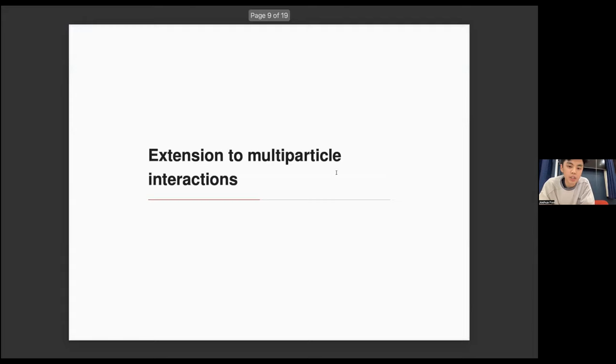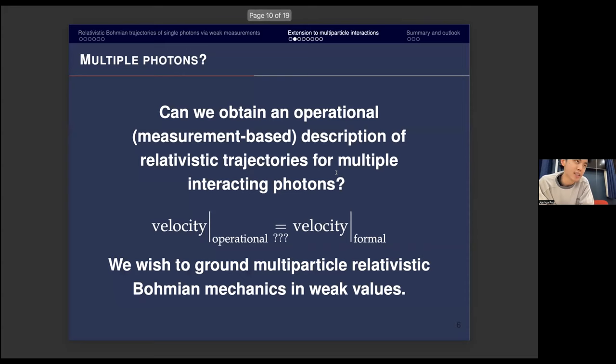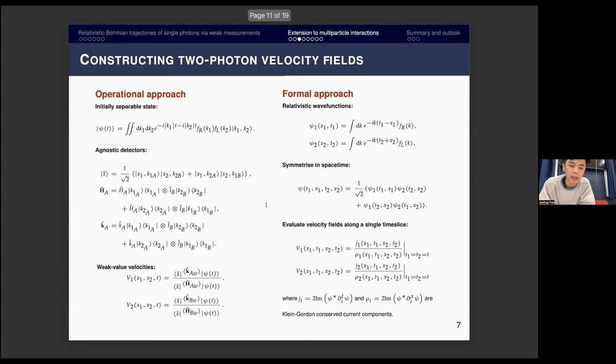Extension to multi-particle interactions. We pushed Bohmian mechanics from non-relativistic regimes to relativistic regimes, and now we want to ask, can we include a consistent description that incorporates multiple interacting photons? Can we derive some velocity field and trajectories using a weak value type formula and show that this is equivalent to a manifestly Lorentz covariant theory that is constructed from your usual relativistic components like the Klein-Gordon equation?